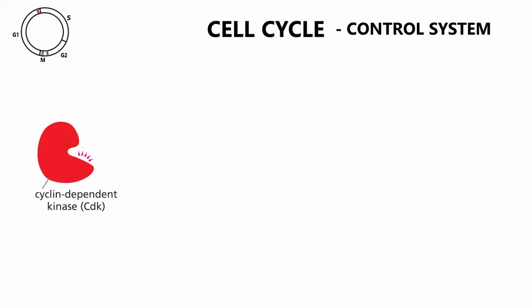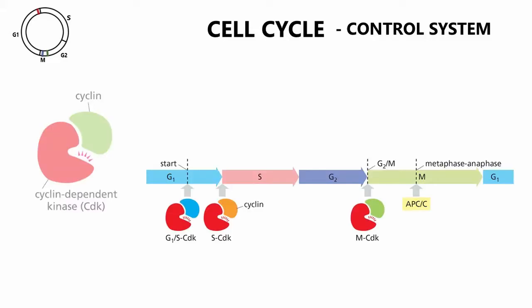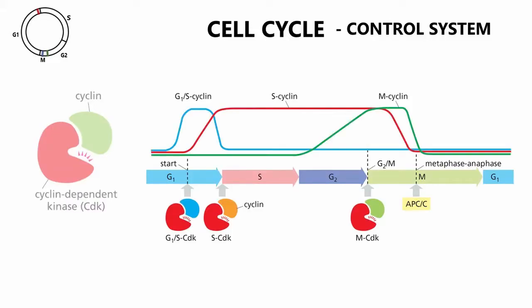Each of these transitions depend on the activation of cyclin-dependent kinases, that as the name implies, are regulated by the presence of cyclins. Each CDK binds a specific cyclin whose concentration oscillates during the cell cycle and thus controls the progression.